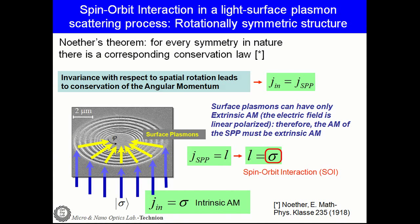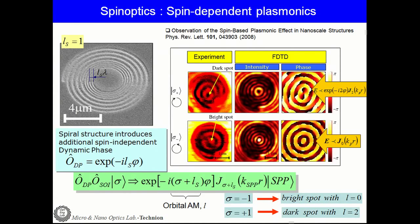We present an experiment to distinguish the intensity of spin-up and spin-down. We added a spiral structure introducing an additional spin-independent dynamic phase. We realized a structure with L equal to one, a one-lambda jump in the spiral phase, and illuminated it with spin-up and spin-down. For spin-up we observed a dark spot, which is the signature for orbital angular momentum equal to two, and for spin-down we observed a bright spot, indicating no orbital angular momentum of the surface wave.